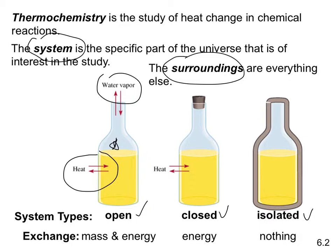An isolated system — like a bomb calorimeter, which we'll study in the next couple of lectures — doesn't allow either energy or mass to be exchanged with the surroundings. You should be familiar with what each type of system is able to exchange. The reaction flask is defined as the system, so everything else surrounding it is the surroundings.